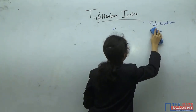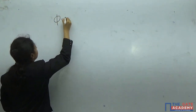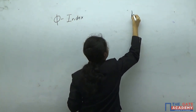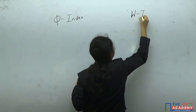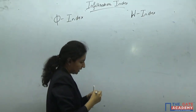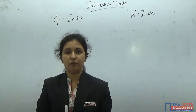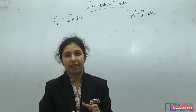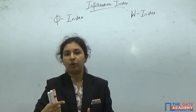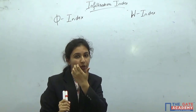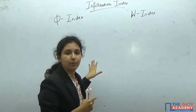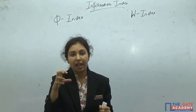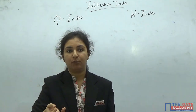Let's discuss what Phi index is. Phi index represents the average rate of infiltration for that rainfall which is contributing to runoff — for that rainfall which is contributing to runoff. I will explain this definition with a diagram. Phi index represents only that rate for that rainfall which is giving runoff values.